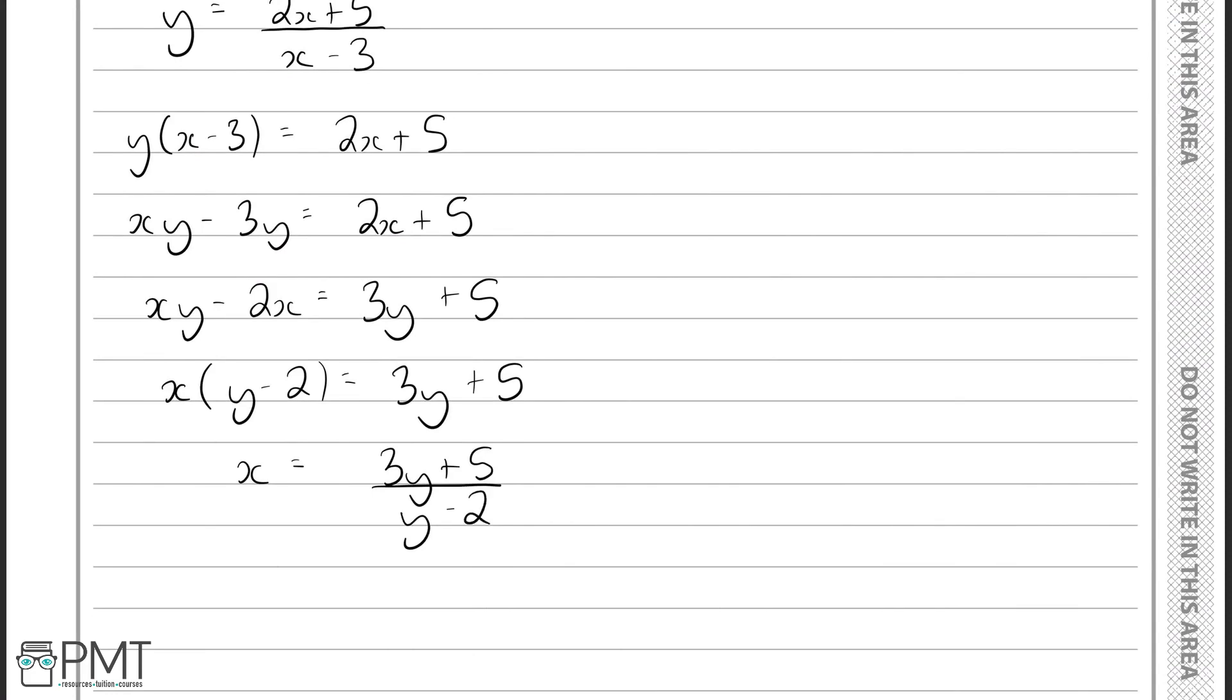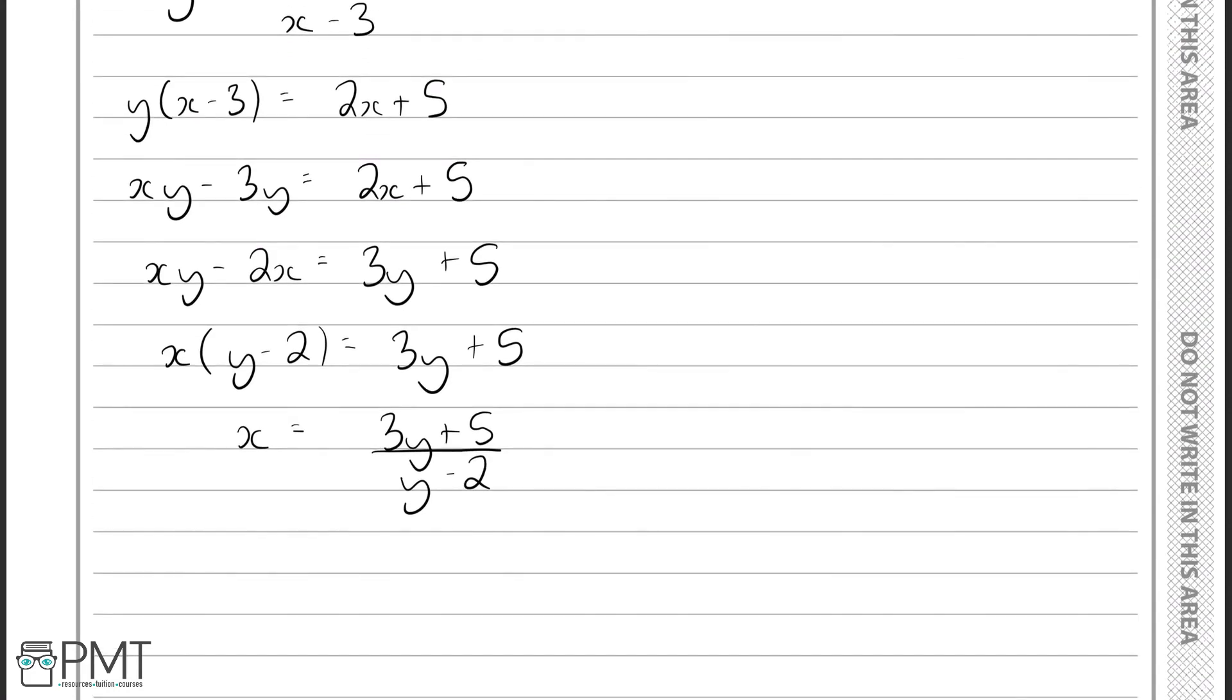Now substituting the correct symbols back in, x now becomes the inverse, which is g to the minus 1 of x. On the right-hand side, we'll have 3x plus 5 over x minus 2. And that gives you the inverse function right there.